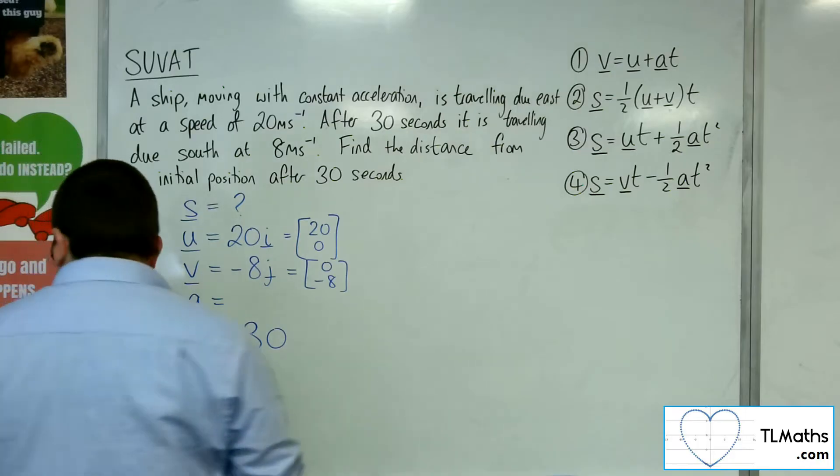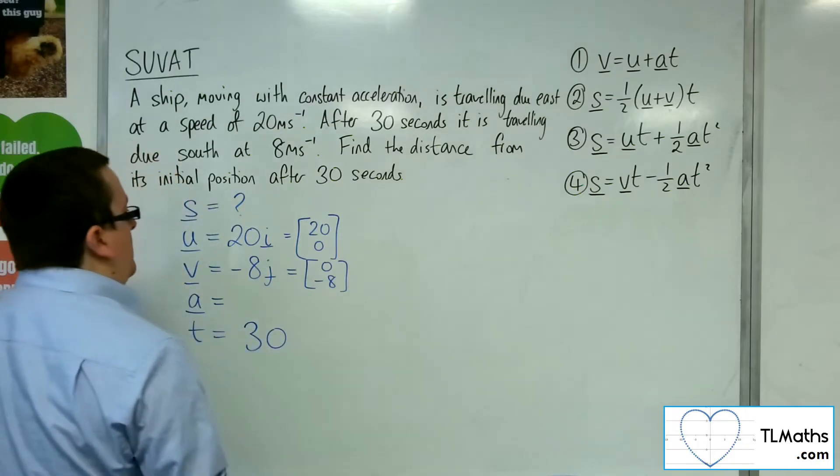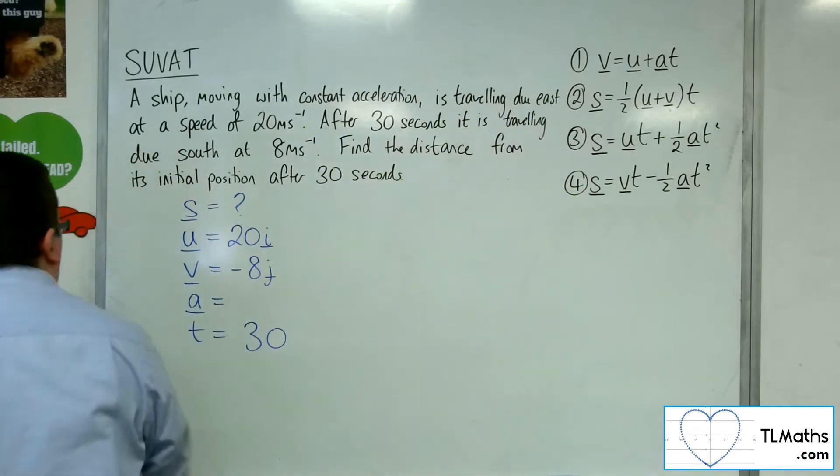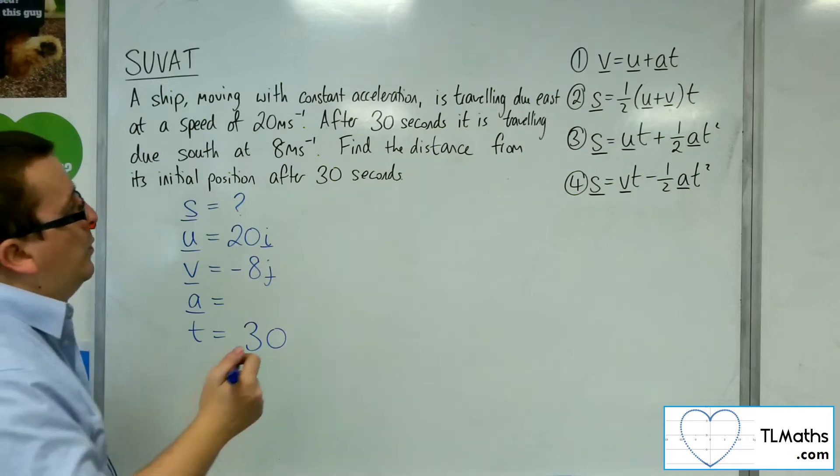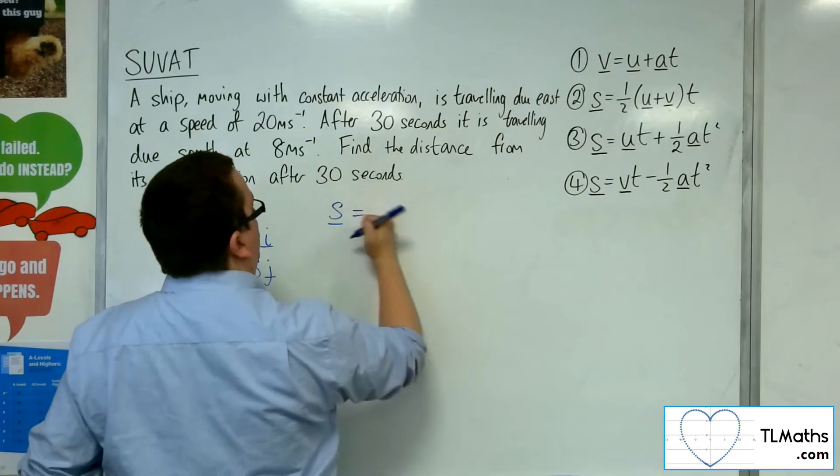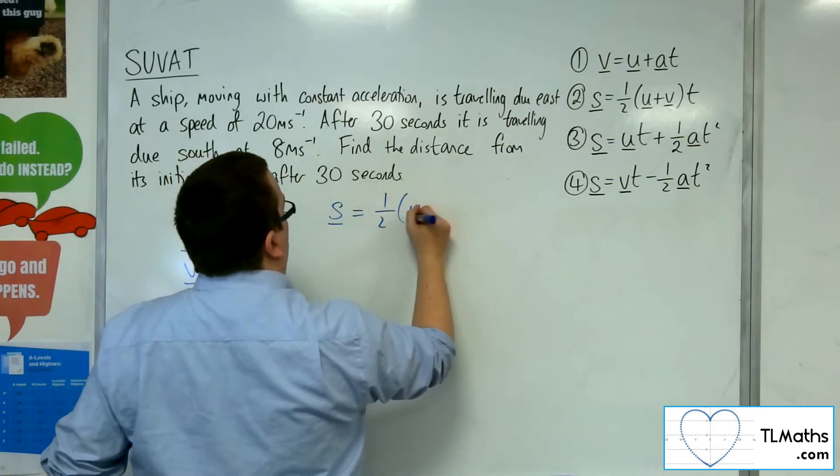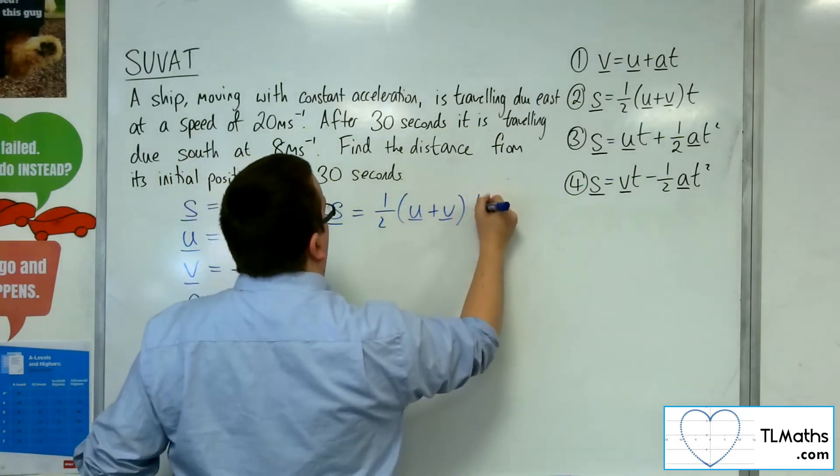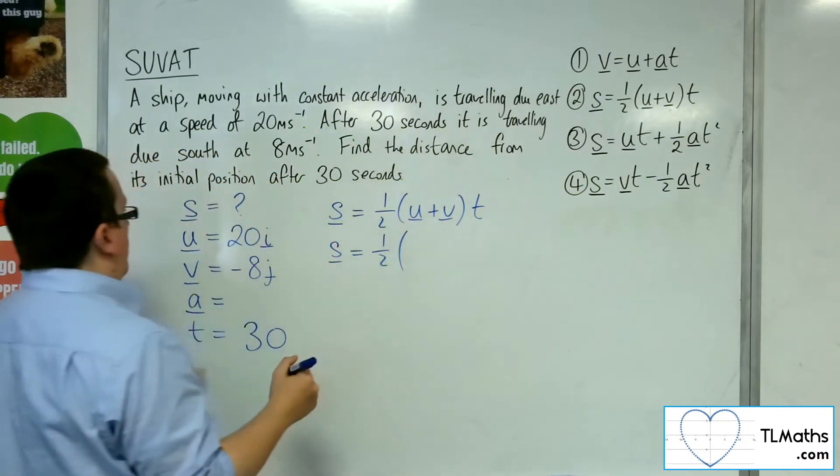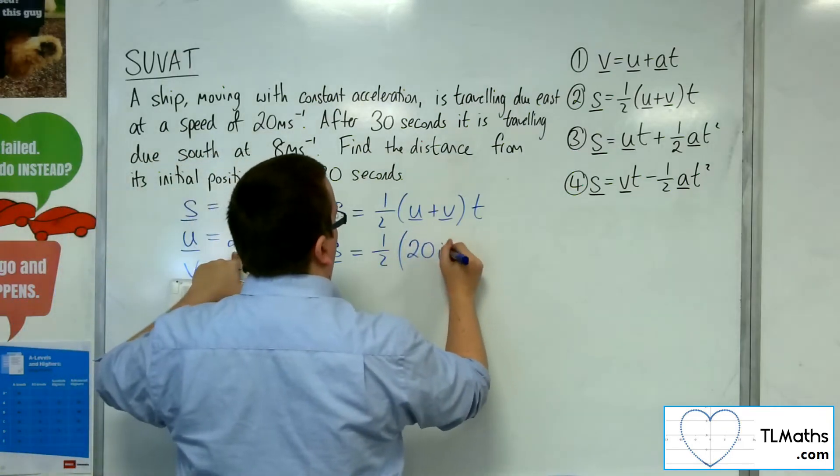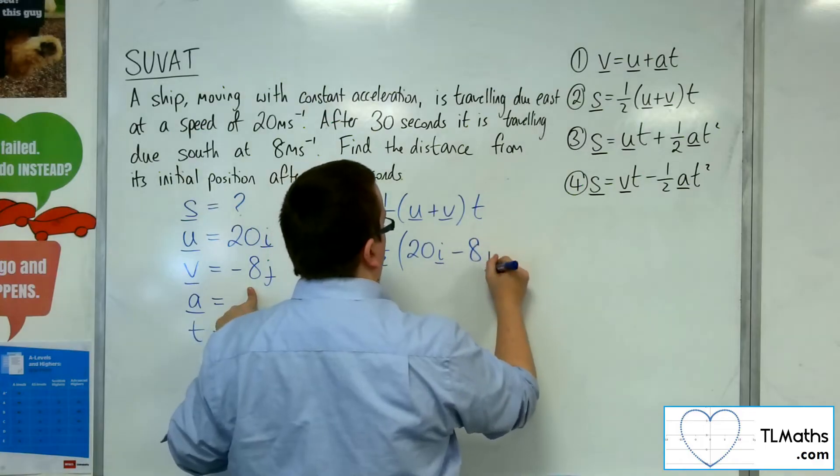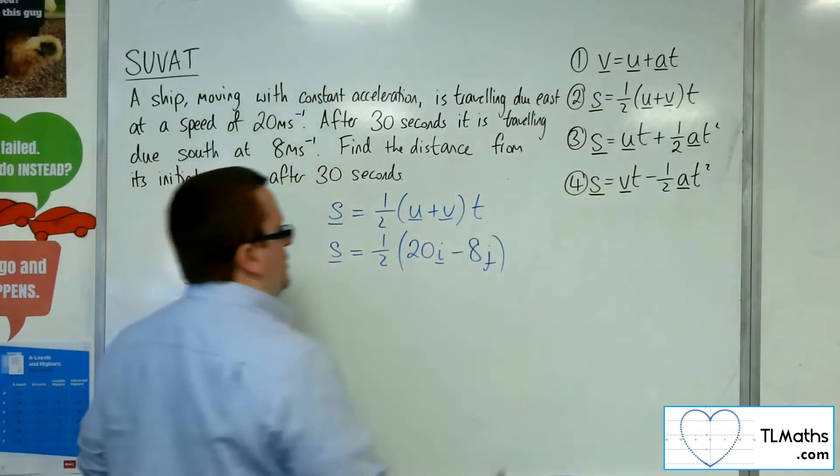I'm going to stick with the i's and j's for this problem. Using equation number 2: S = ½(u + v)t. So S = ½(20i + (-8j)) × 30.